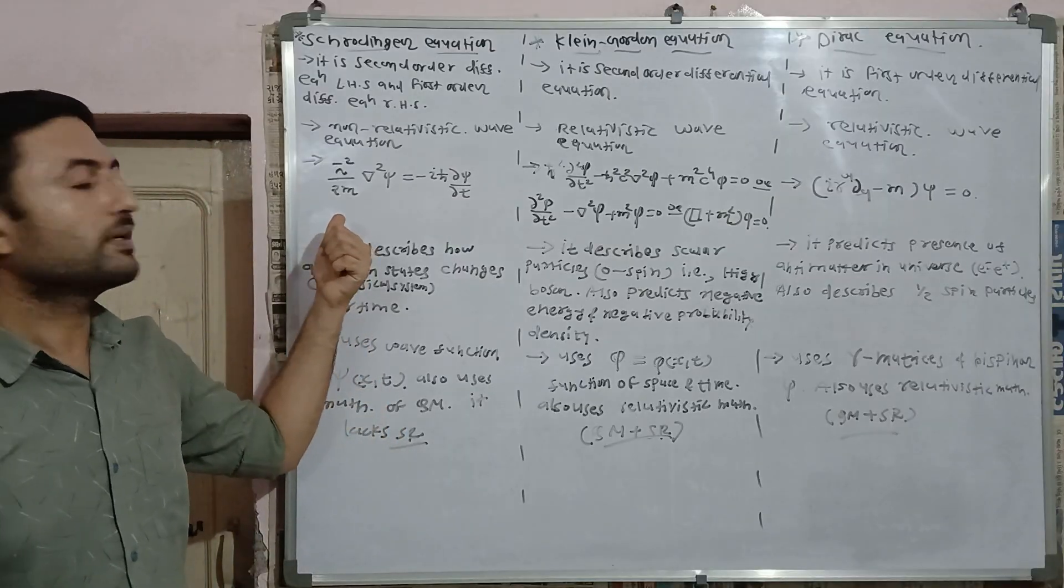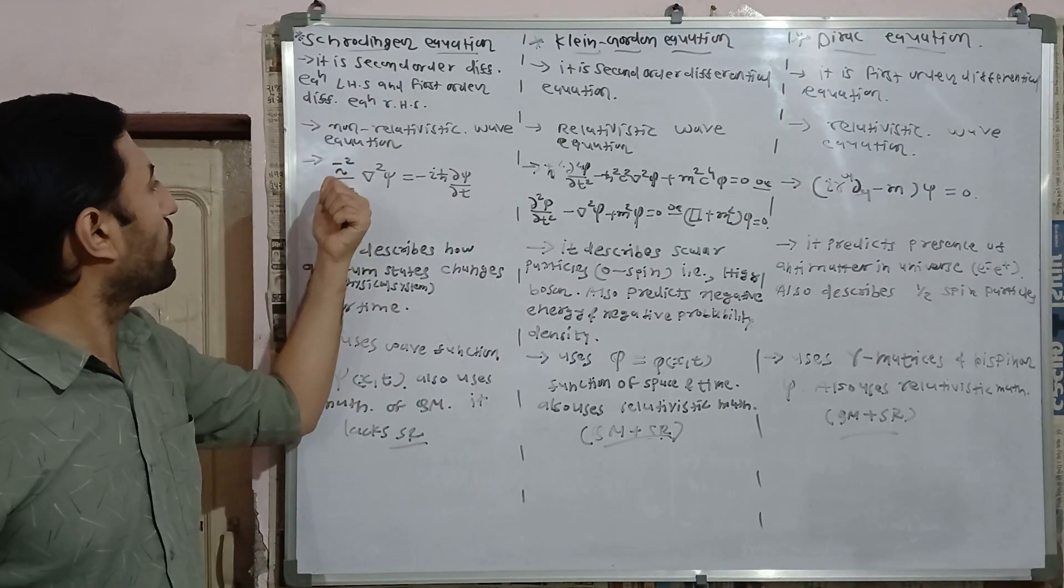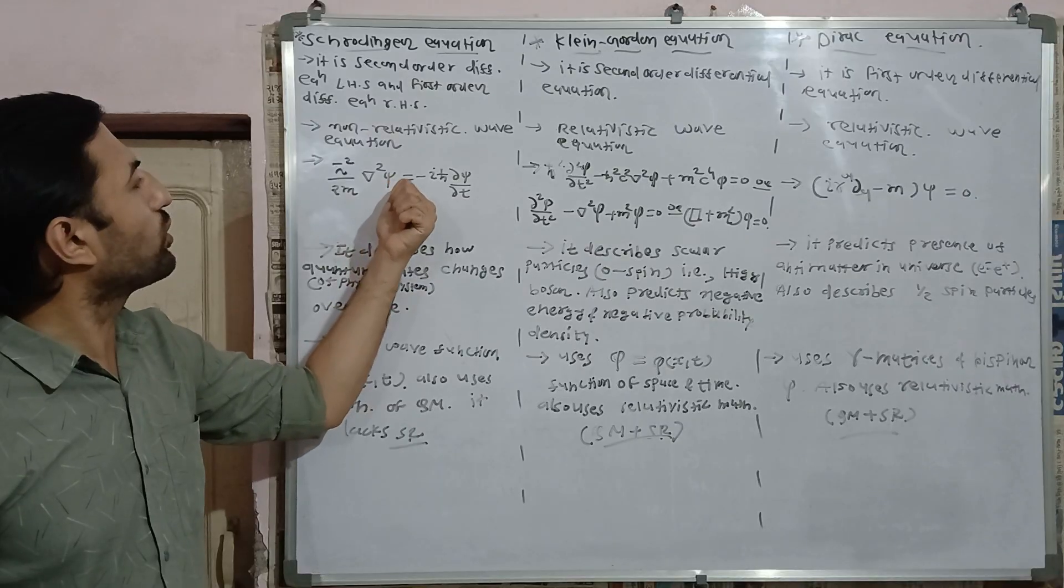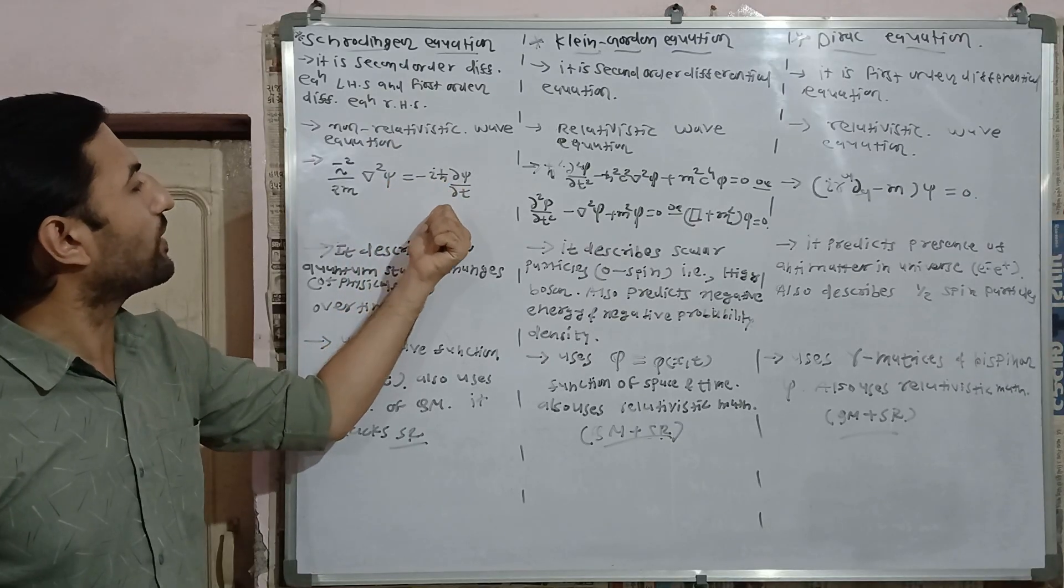Schrodinger equation is written as h-bar squared over 2m del squared psi equals minus i h-bar del psi over del t.